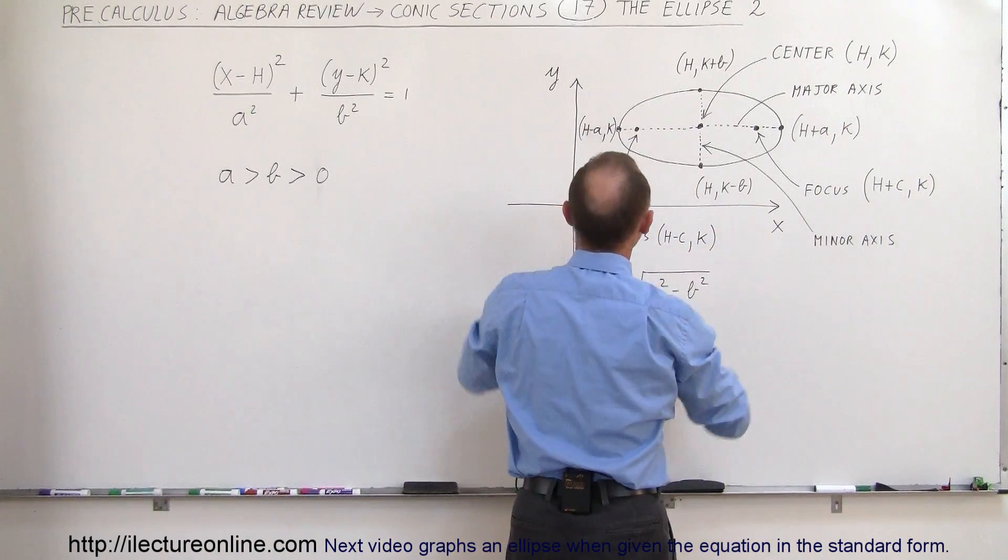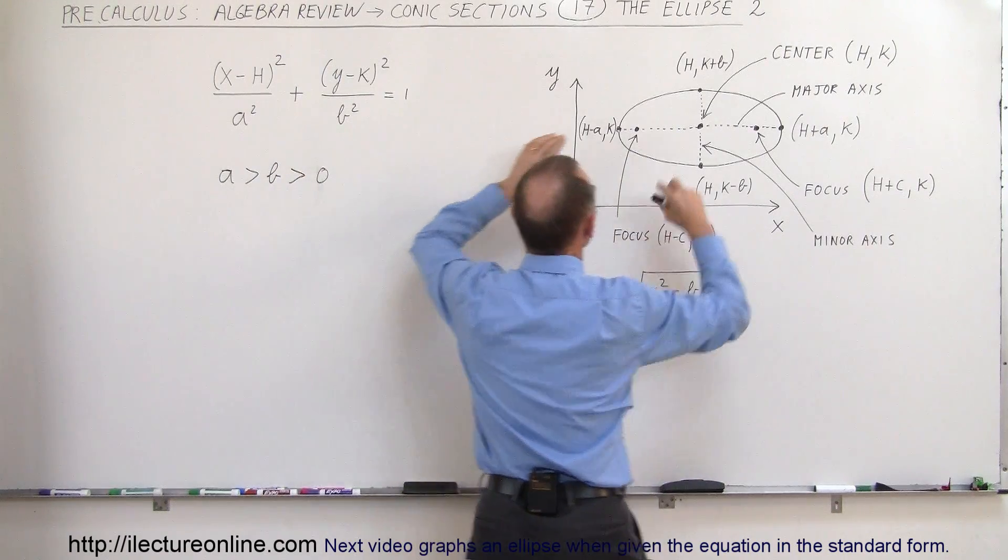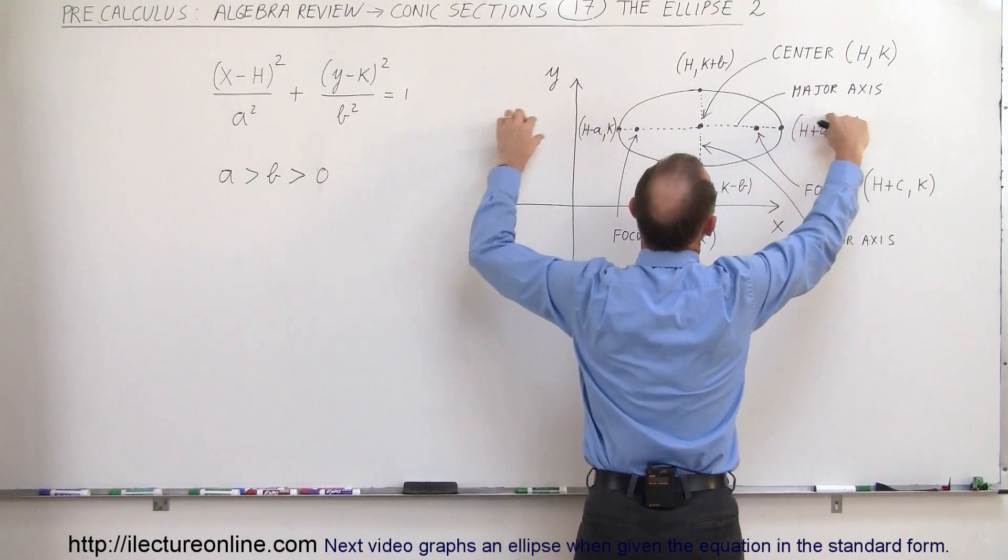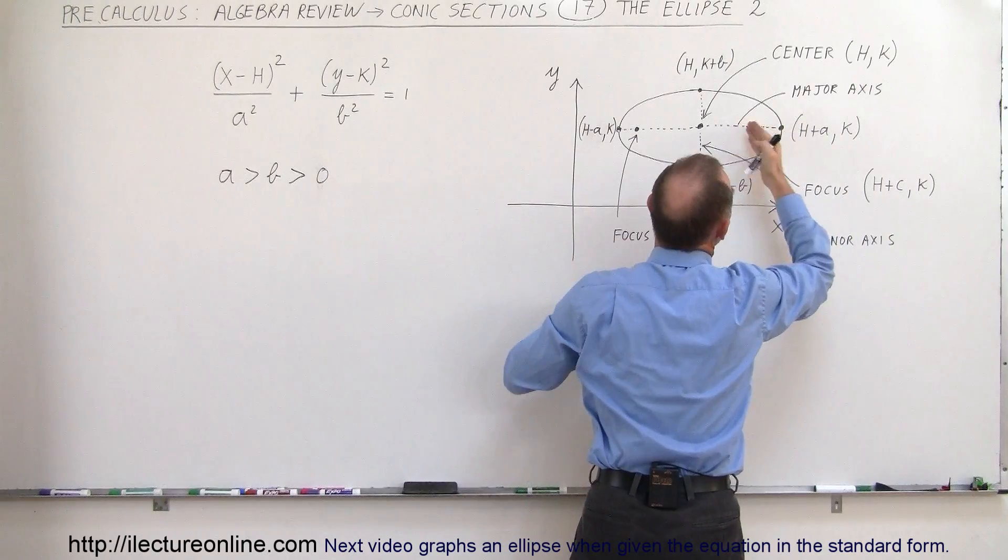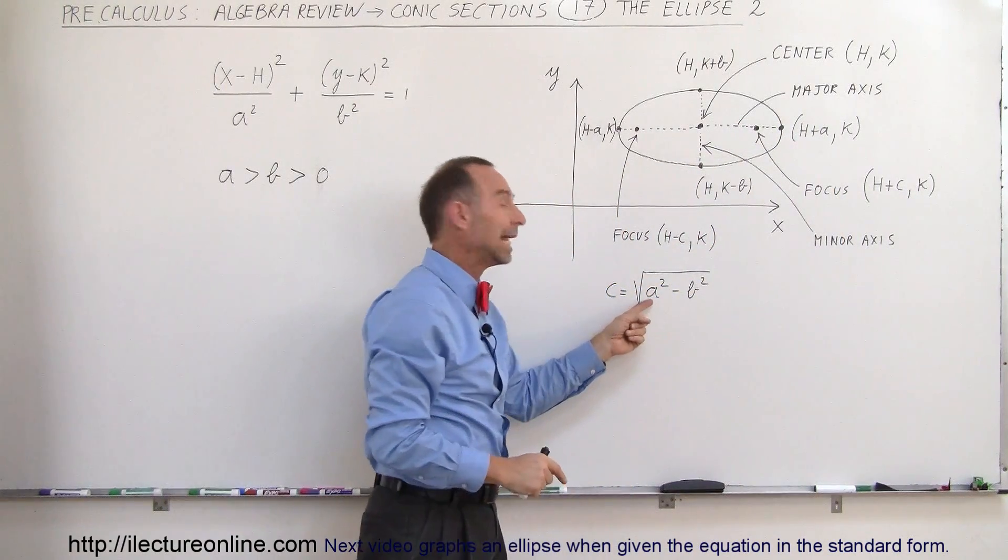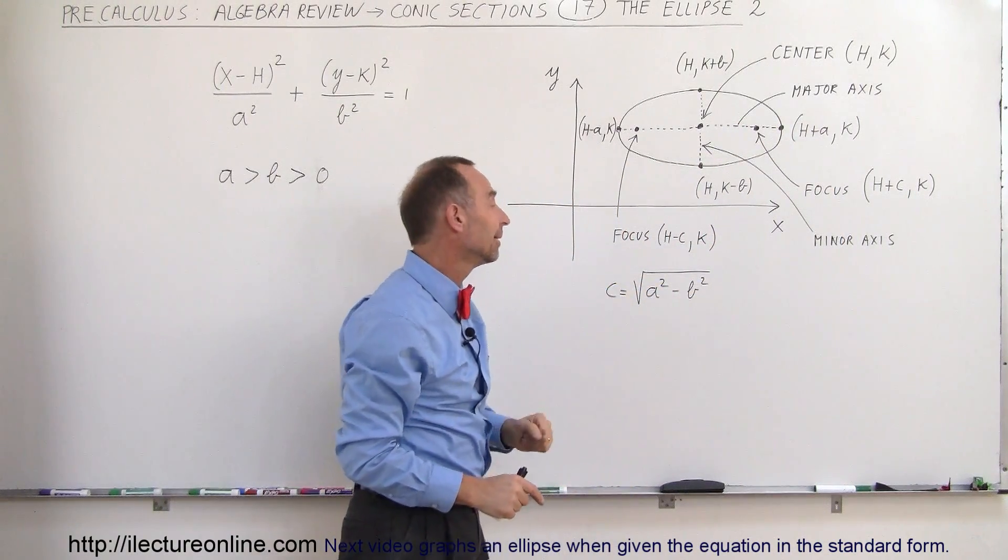Now, what if a is much, much bigger than b? Well, then you get a very flat ellipse, the ellipse becomes very long, and you can see that c will just become a much bigger number when a becomes much, much bigger than b.